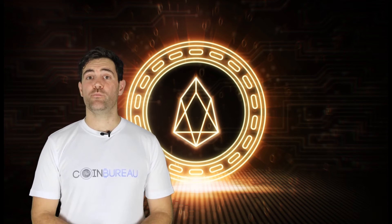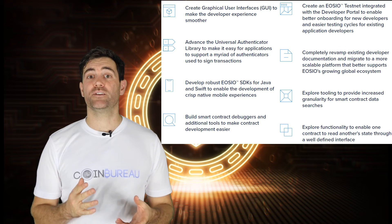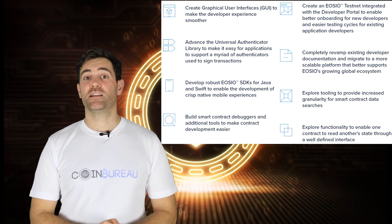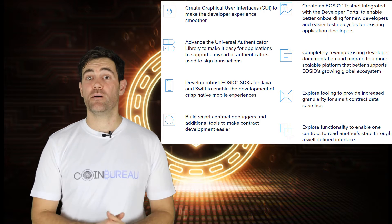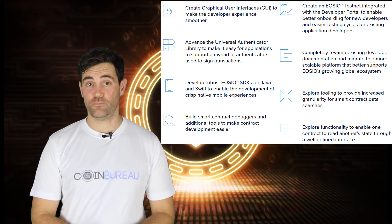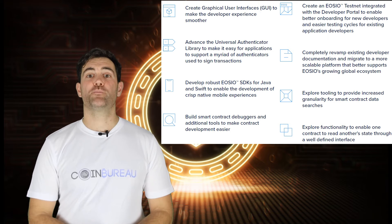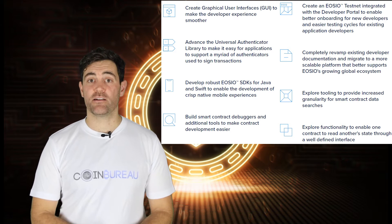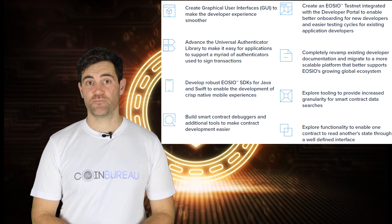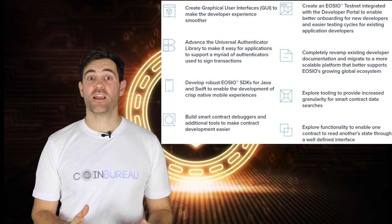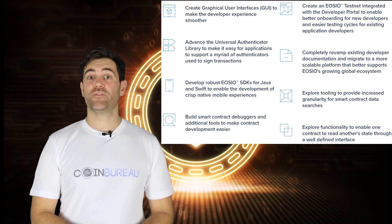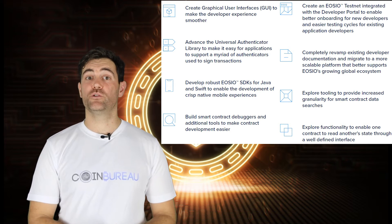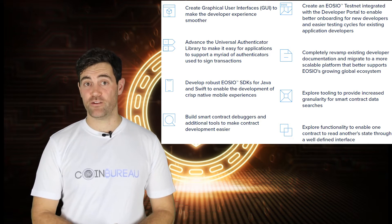A second area in which EOS is focusing is through its developer portal. Recently, the project released EOSIO2, which offers features that make it easier, more secure, and faster to build on the platform. Additionally, the project provides all the tools necessary to get started developing on EOS — tools like EOS Virtual Machine, EOSJS, an EOSIO Software Development Kit for Swift, and many more. If you're a developer, you'll get a smoother experience along with a more diverse and robust blockchain environment.